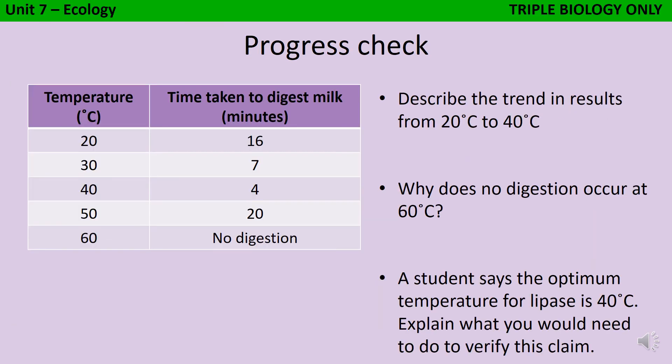In the exam, you may be given some data from this practical and asked to analyze this. Pause the video and have a go at answering these three questions about this data table now. In the first question, you're asked to describe the trend in results and they specify from 20 degrees to 40 degrees, so it's important you're looking at the relevant rows of the table. Here I can see that as the temperature increases from 20 to 40, the time taken goes from 16 to 7 to 4. So firstly, I would say, as the temperature increases, the time taken decreases. If this was a 2 mark question, I'd then want to support that with data from the table by stating, at 20 degrees, it takes 16 minutes, but at 40 degrees, the reaction is four times faster.